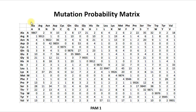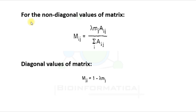Moving towards the mutation probability matrix: an element Mij gives the probability that the amino acid in column j will be replaced by the amino acid in row i after a given evolutionary interval — in this case PAM1. For non-diagonal values of the matrix, the formula is: Mij = λ × Mj × Aij / Σ(Aij), where Aij is an element of the accepted point mutation matrix, λ is the proportionality constant, and Mj is the mutability of the j-th amino acid. For diagonal values: Mjj = 1 − λMj.